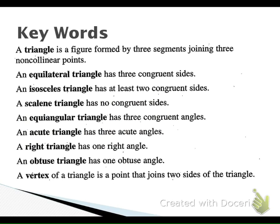This slide shows our vocab words for this one. A triangle is a figure formed by three segments joining three non-collinear points. Remember that means they're not in a line — non-collinear.